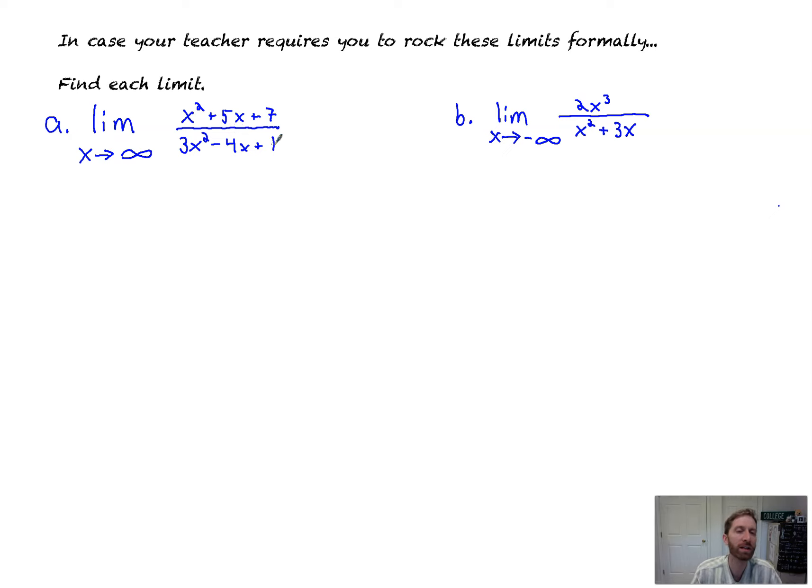So what you essentially need to do is you need to get it so that you get 1 over a whole bunch of variables, because 1 over infinity is accepted to be 0. So we look at this and we say the highest power in the numerator is x squared. The highest power in the denominator is also x squared. So if I divide the entire numerator by x squared and the entire denominator by x squared, we'll be in good shape.